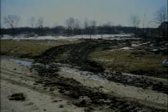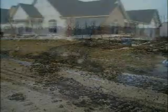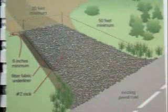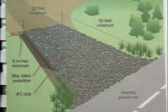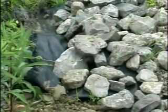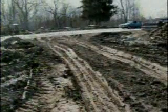Traffic leaving construction sites during periods of wet weather can drag large amounts of mud onto nearby roads, potentially endangering public safety. To address this, rock construction entrances must be installed at all points where vehicles need routine access. Stone at least 2 inches in diameter should be placed over geotextile fabric to a minimum thickness of 6 inches. Fabric can help reduce stone lost into the ground under the weight of constant traffic.